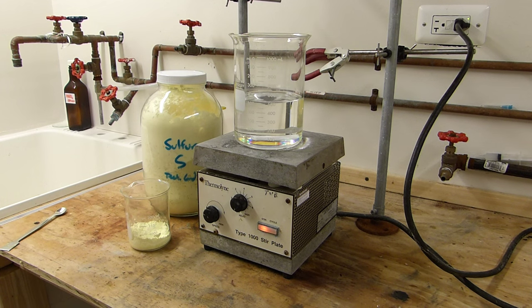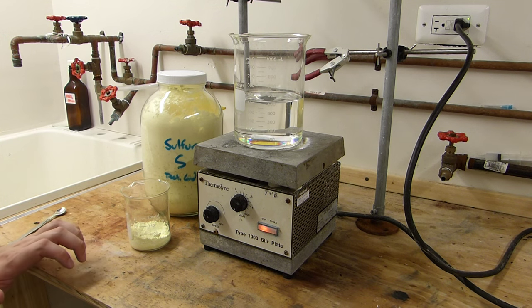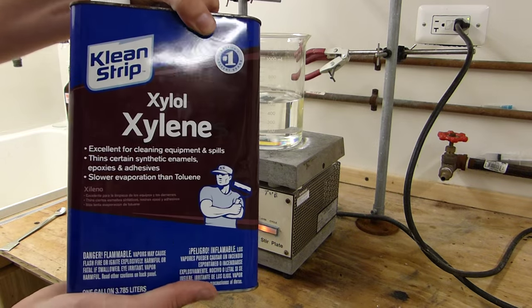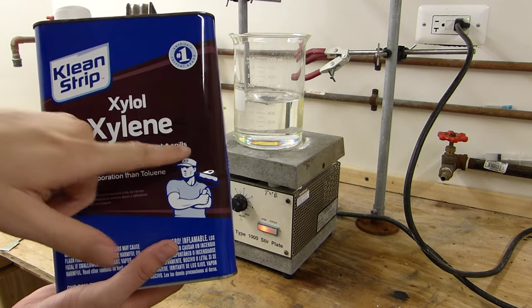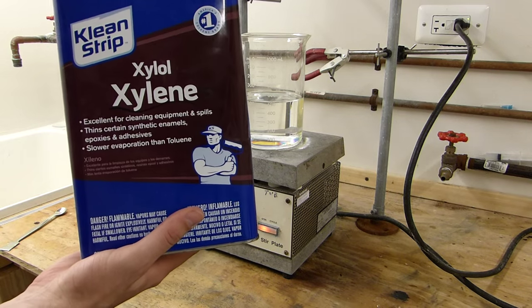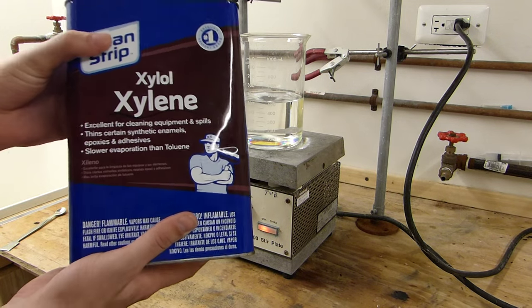But at the hardware store you can get one solvent that works pretty well for sulfur, and that is xylenes. Notice I didn't say xylene, it's xylenes because this is actually three isomers of xylene, xylene being dimethylbenzene.